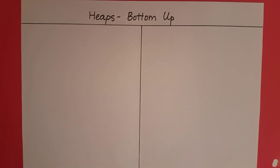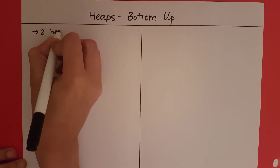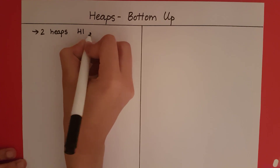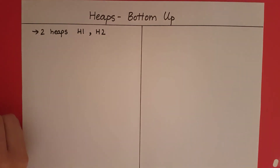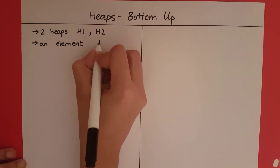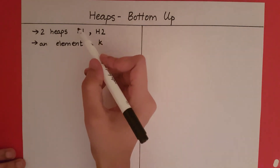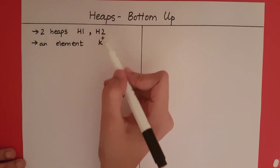In this video we will take a look at the bottom-up construction of a heap. The bottom-up construction of a heap relies on one basic principle: if we have two heaps h1 and h2 and we have an element k, then we need to construct a larger heap h with all the elements of h1 and all the elements of h2 and k.